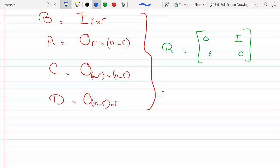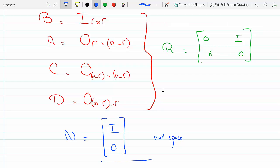So in this case, since my pivots are located in the identity matrix, my null space will be I, zero. This is the null space.